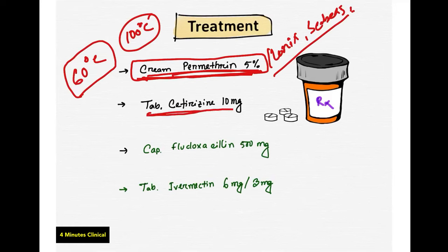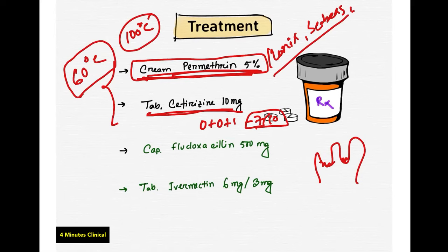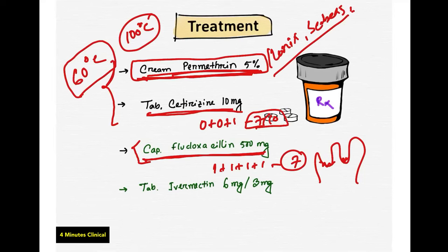For antipruritic relief, prescribe Tablet Cetirizine 10mg, one tablet at night, for 7 to 10 days. In case of secondary superficial bacterial infection, the most desired antibiotic is Flucloxacillin — Capsule Flucloxacillin 500mg, one capsule four times a day (1+1+1+1) for 7 days. If there is no secondary infection, this additional antibiotic is not needed.